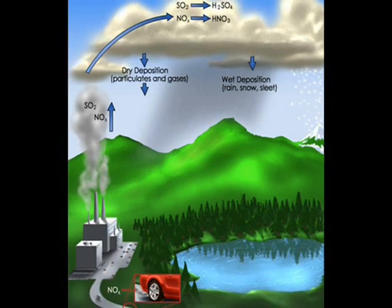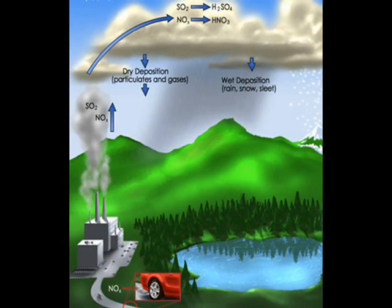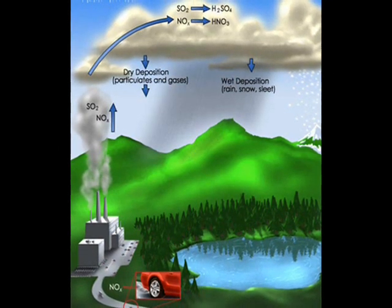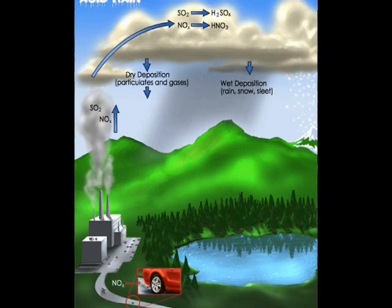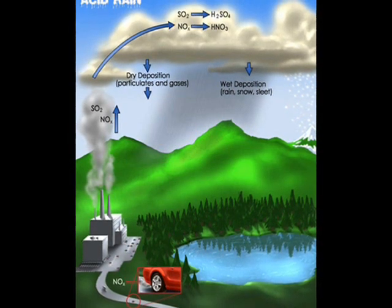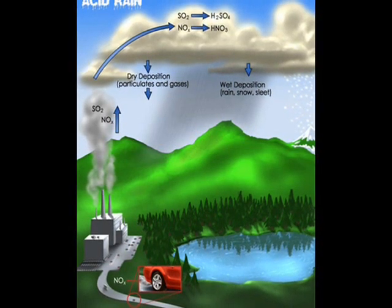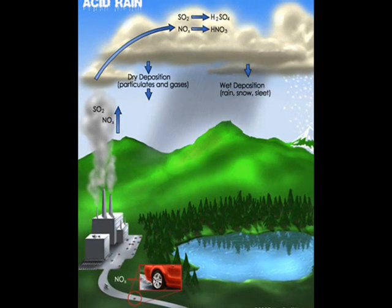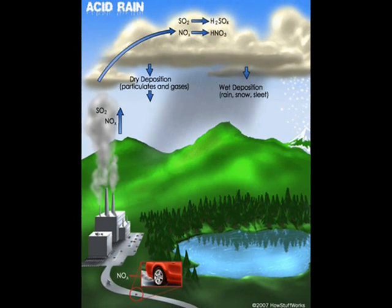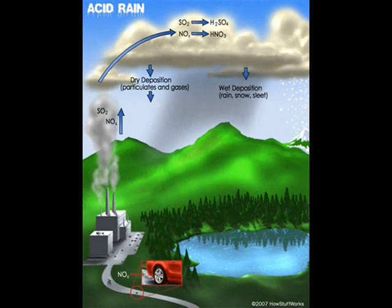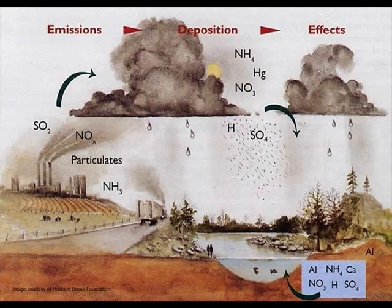Acidic deposition can have consequences many miles downwind from its source. Emissions containing sulfur dioxide and nitric oxide from industries and utilities begin the process. Sulfur dioxide and nitric oxide can be transformed into sulfuric acid and nitric acid through chemical reactions in the atmosphere.